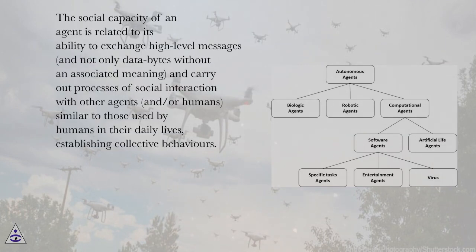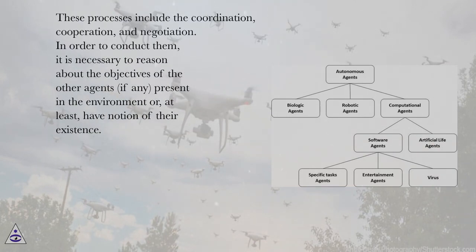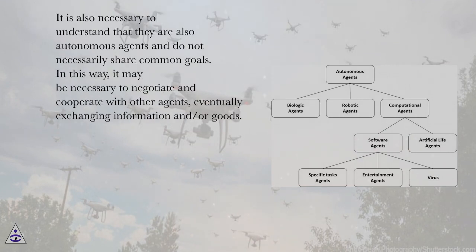The social capacity of an agent is related to its ability to exchange high-level messages — and not only data bytes without an associated meaning — and carry out processes of social interaction with other agents and or humans, similar to those used by humans in their daily lives, establishing collective behaviors. These processes include coordination, cooperation, and negotiation. In order to conduct them, it is necessary to reason about the objectives of the other agents present in the environment, or at least have notion of their existence, and understand that they are also autonomous agents and do not necessarily share common goals.